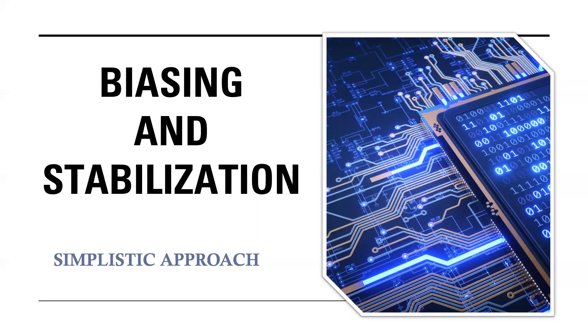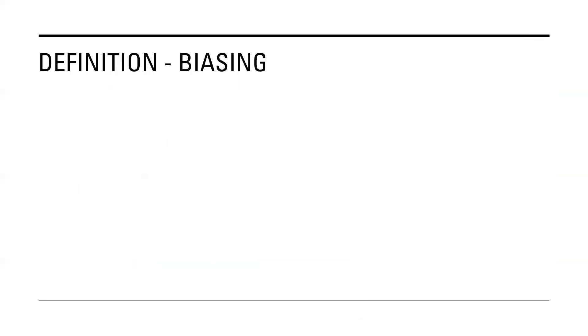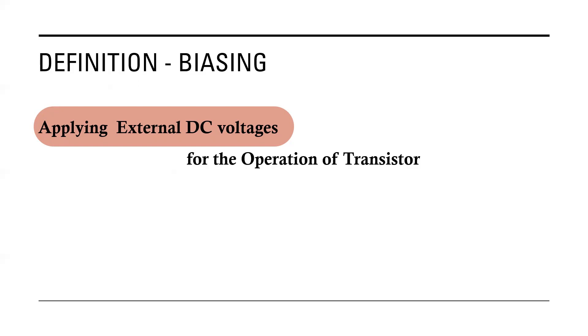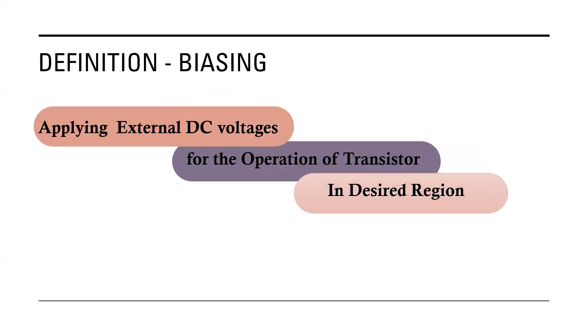Let us go to the point now. The definition: it is actually a process of applying the external DC voltages of a correct amount of polarity and magnitude to the two junctions of the transistor such that the operation of transistor is always carried out in the desired region or desired zone. This is known as the biasing of the transistor.